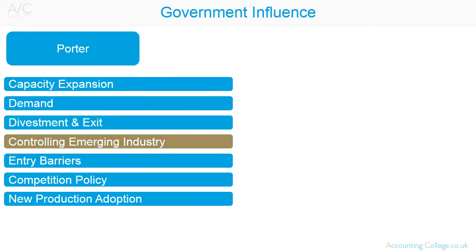Emerging industries may be controlled by government, for example mobile phone networks. Entry barriers: government policy may restrict or encourage investment. Competition policy: for example monopoly regulations. New product adoption: regulation of certain products, for example in the drugs industry.